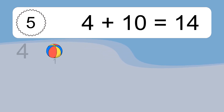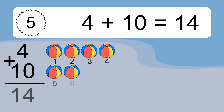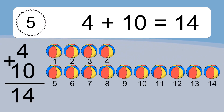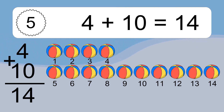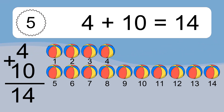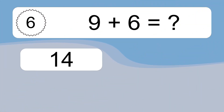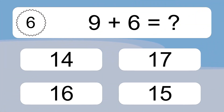Four plus ten equals what? Four plus ten equals fourteen. Let's count it: one, two, three, four, five, six, seven, eight, nine, ten, eleven, twelve, thirteen, fourteen.